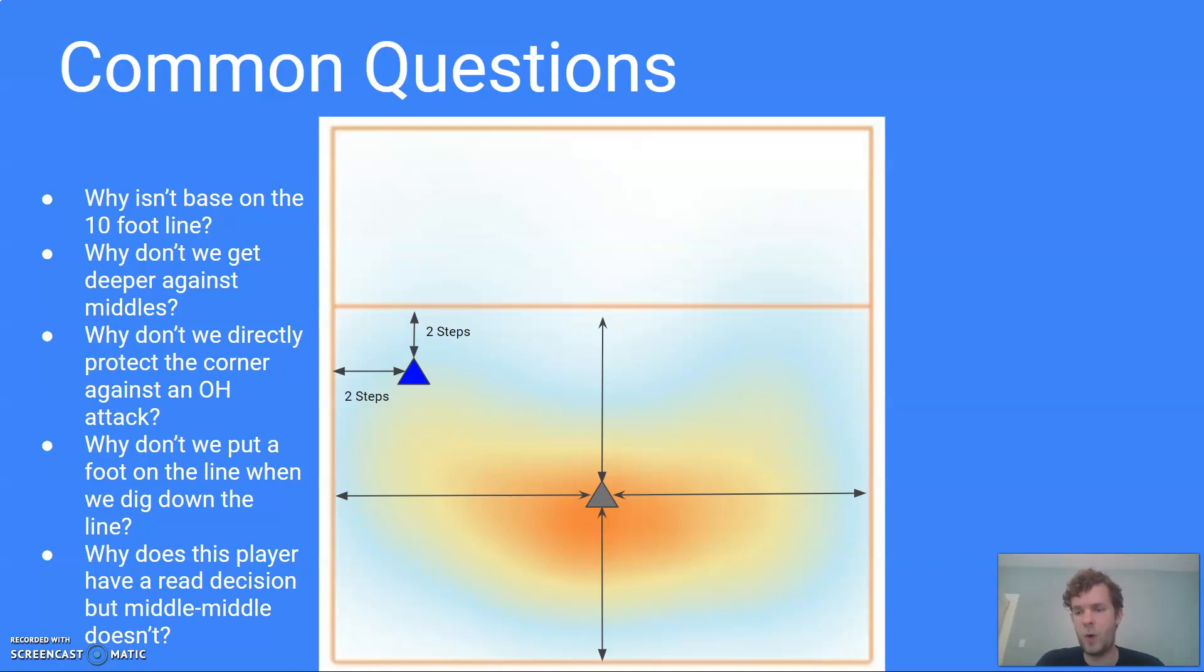Last question here, why does this player have a read decision, but the middle middle doesn't? I get this a lot from some of my players. The left back defender has a read because there tends to be more variation in this zone. So you see this whole area that our left back defender is covering is mostly this yellowish, maybe blue color on our heat map.